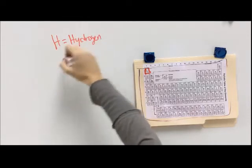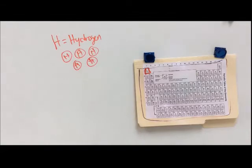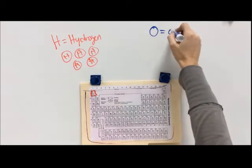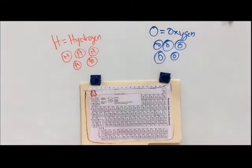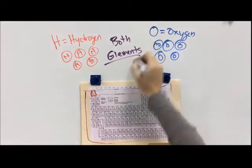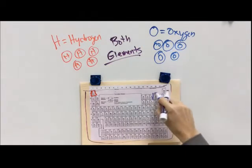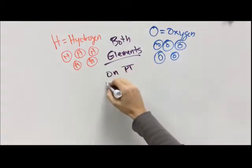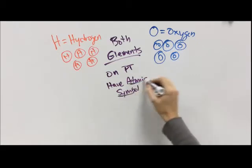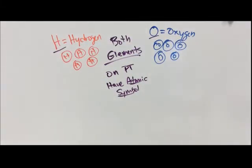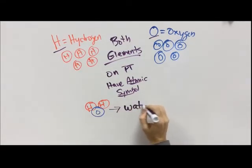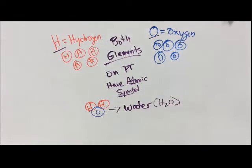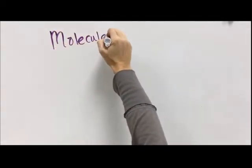H stands for hydrogen — hydrogen is an element on the periodic table, and a bunch of hydrogen atoms is elemental hydrogen. O is oxygen, also on the periodic table; a bunch of oxygen atoms is the element oxygen. They each have one thing in them, which makes them elements. Now if we take two hydrogens and stick them to one oxygen, we get water, written as H2O.